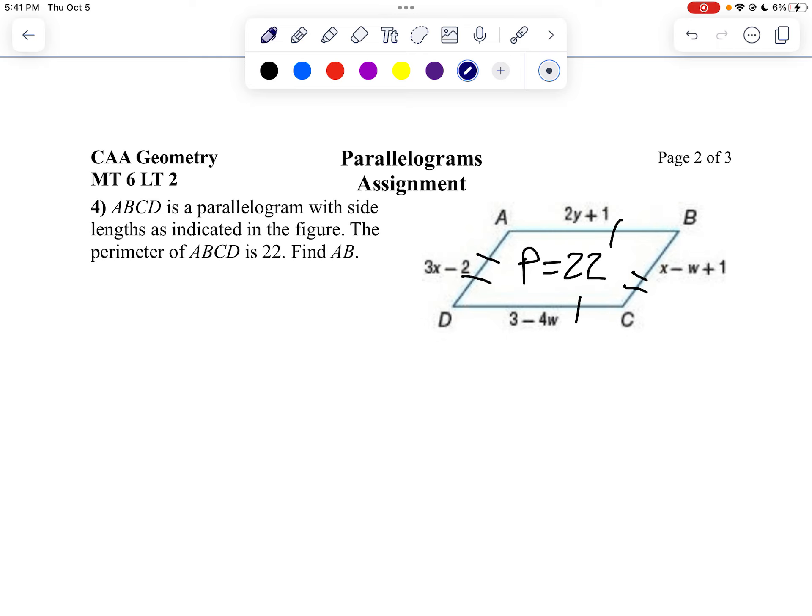So I'm going to start here with 3x minus 2 equals x minus w plus 1. And I think what I'll do is I'll solve for w. And the reason I'm going to solve for w is I've got a w over here for c, so I can use some substitutions. So let's get w by itself. So if I want to get w by itself, now we're just going to do some algebra. Let's subtract x from both sides. And we'll subtract 1 from both sides. So then we'll get 2x minus 3 equals negative w. Well, I want w, so I'll say that'll be w equals negative 2x plus 3.